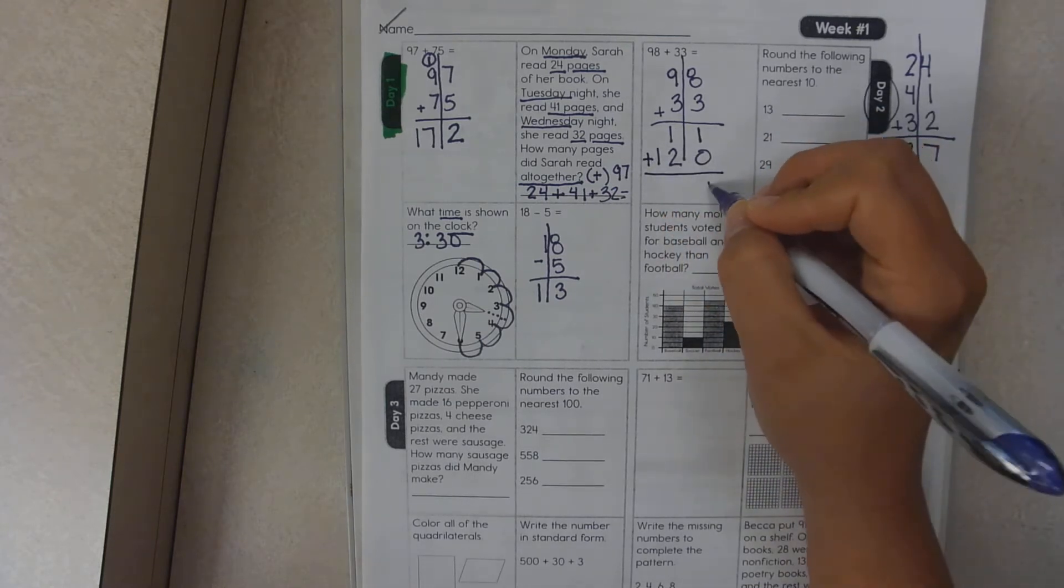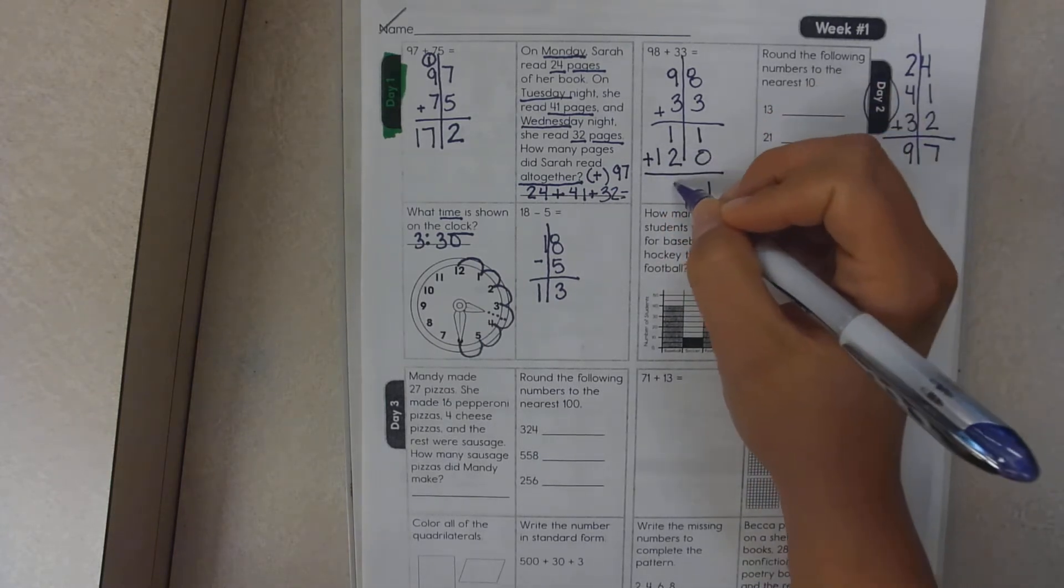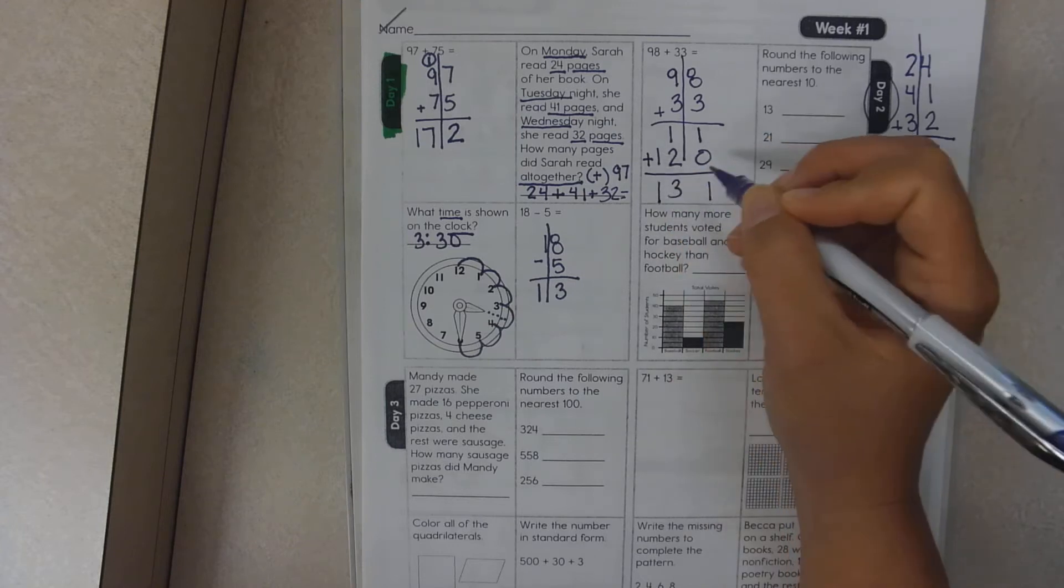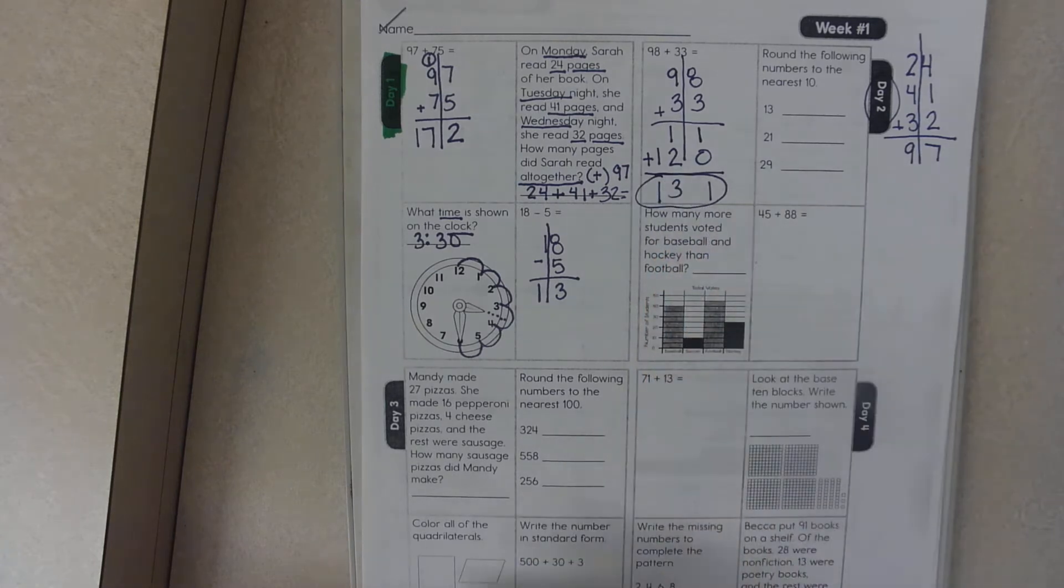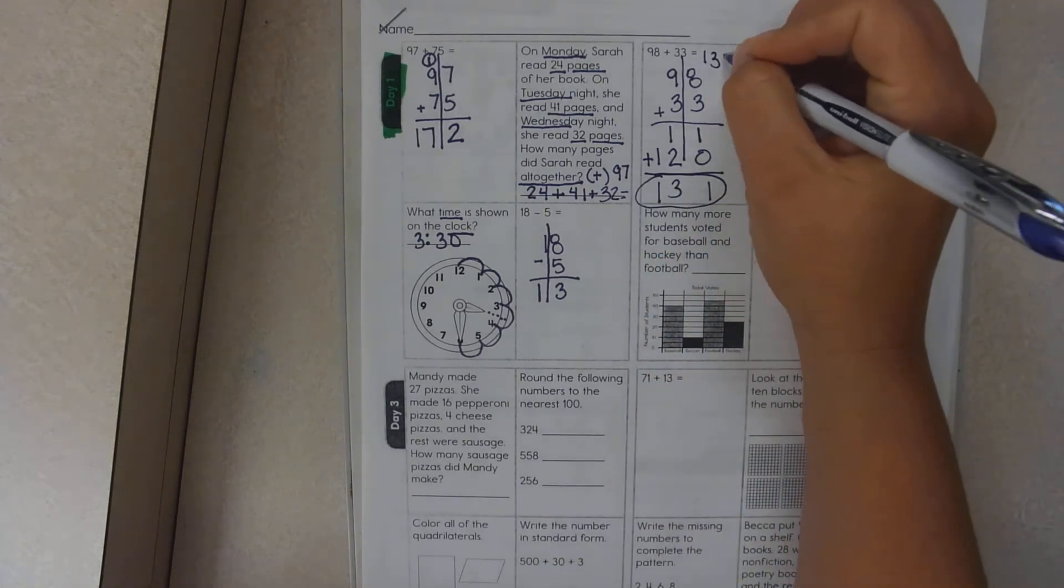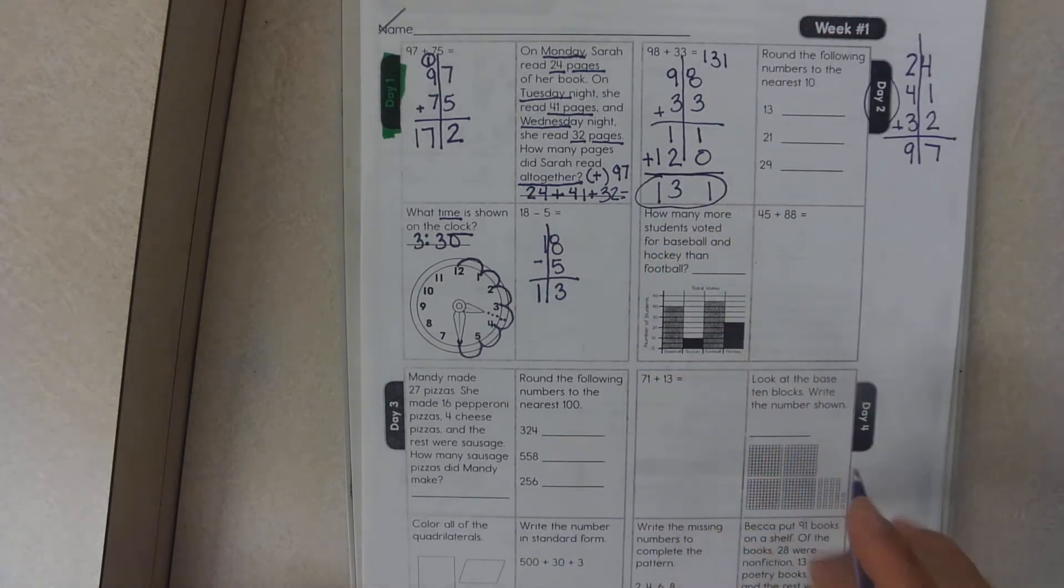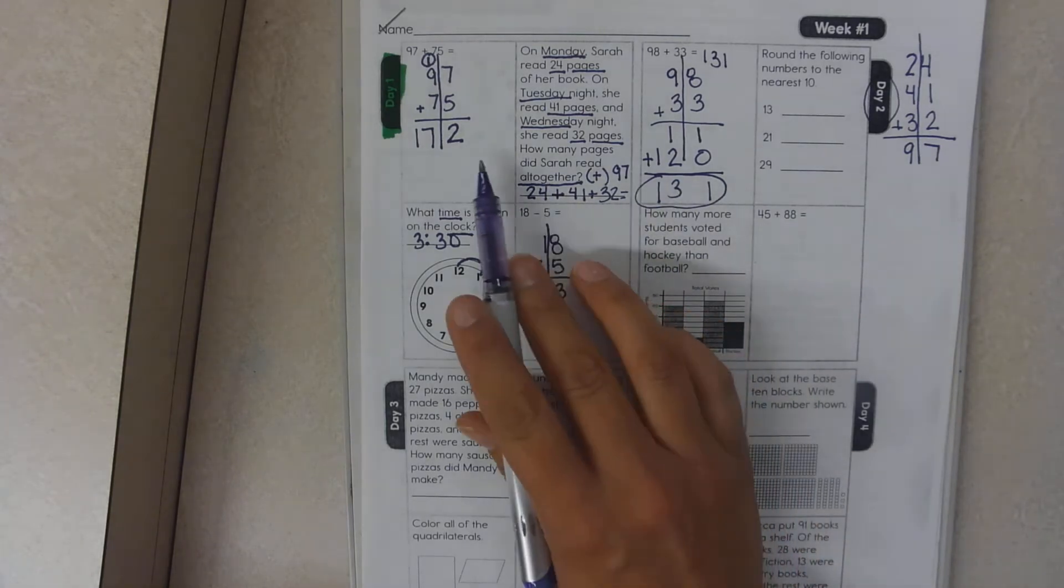1 plus 0 is 1. 1 plus 2 is 3. 1. So my answer is 131. I'm just going to place it right back up here. Either way is correct.